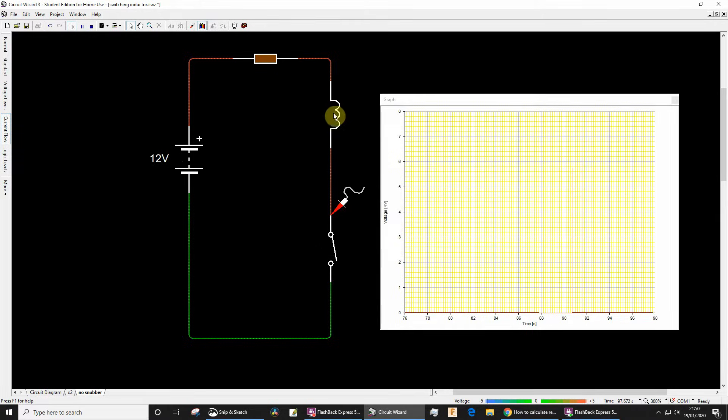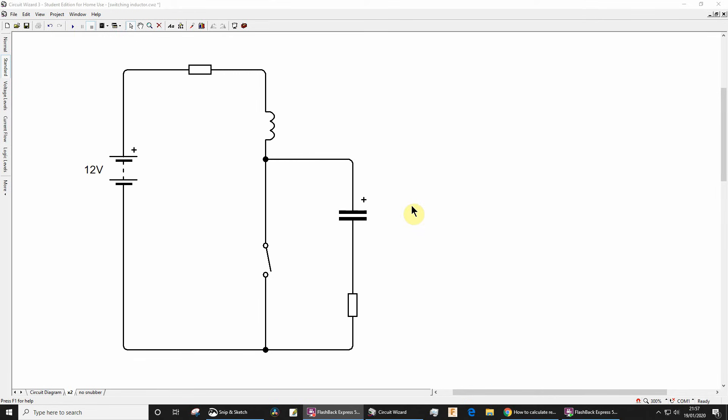An RC snubber network like this one can be used to absorb the energy stored in the inductor and therefore limit the voltage rise across this switch to an acceptable level. For example, if the switch had a maximum rating of 100 volts DC, we might wish to limit the transient voltage to a lower level like 50 volts DC. This would give us a good safety margin.